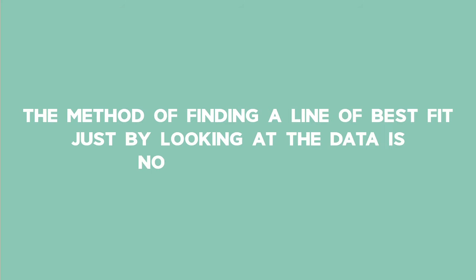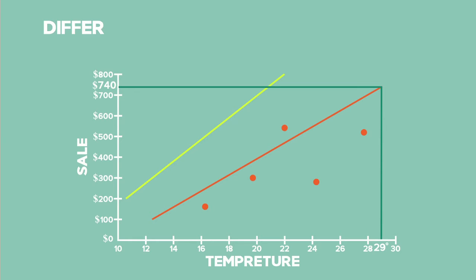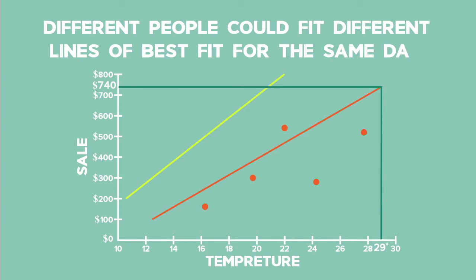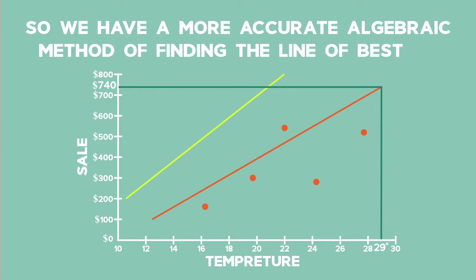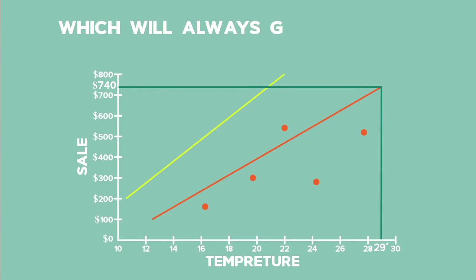The method of finding a line of best fit just by looking at the data is not very accurate. Different people could fit different lines of best fit for the same data. So we have a more accurate algebraic method of finding the line of best fit, which will always give the same equation for a given data set.